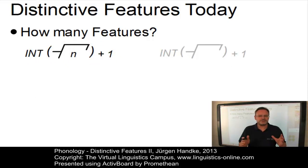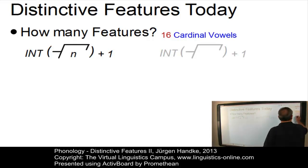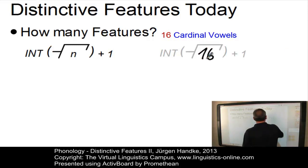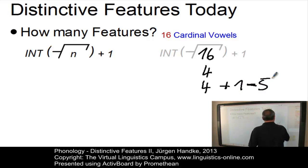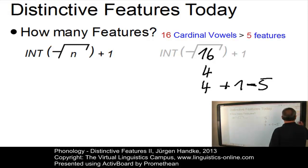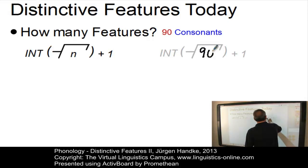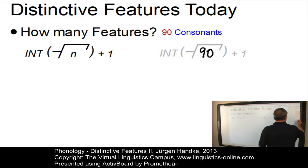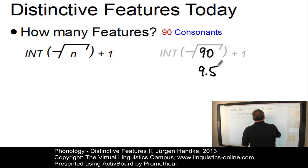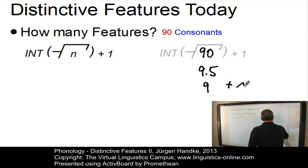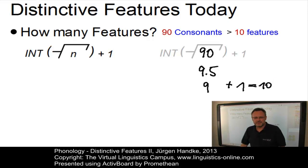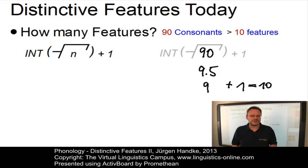To find out the number of features we need to distinguish the 16 cardinal vowels, we have to take the square root of 16, which is of course 4. The integer value of 4 is also 4, and then we add 1, so the result will be 5. So to define the 16 cardinal vowels, we need 5 distinctive features. Let's play the same game for the roughly 90 consonants we need. n would now be 90. The square root of 90 is roughly 9.5. The integer value of 9.5 is 9, we add 1, so we get 10. So to define the roughly 90 consonants that exist in the languages of the world in terms of distinctive features, we would need 10 features at minimum.